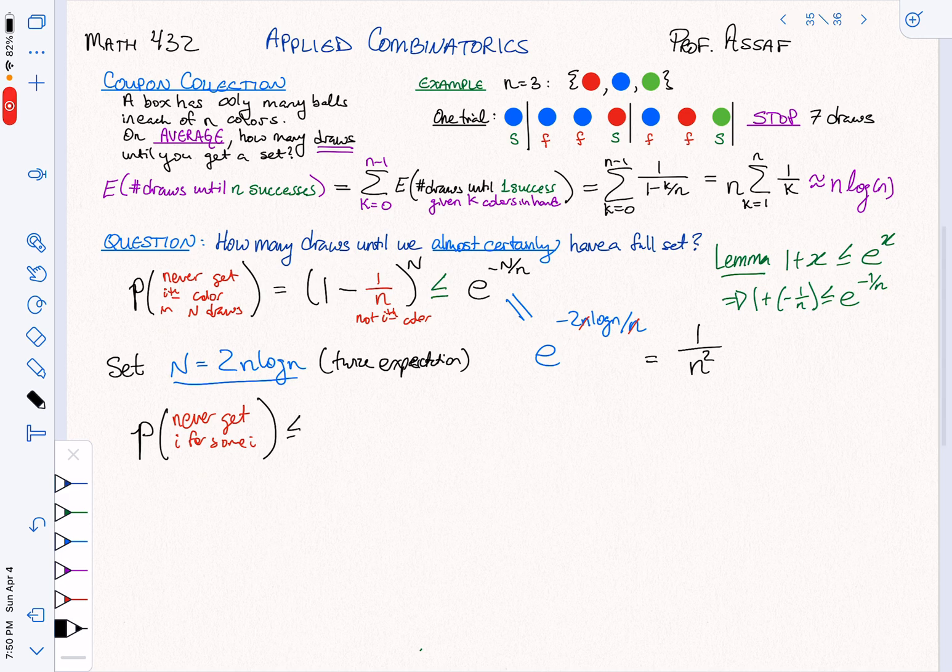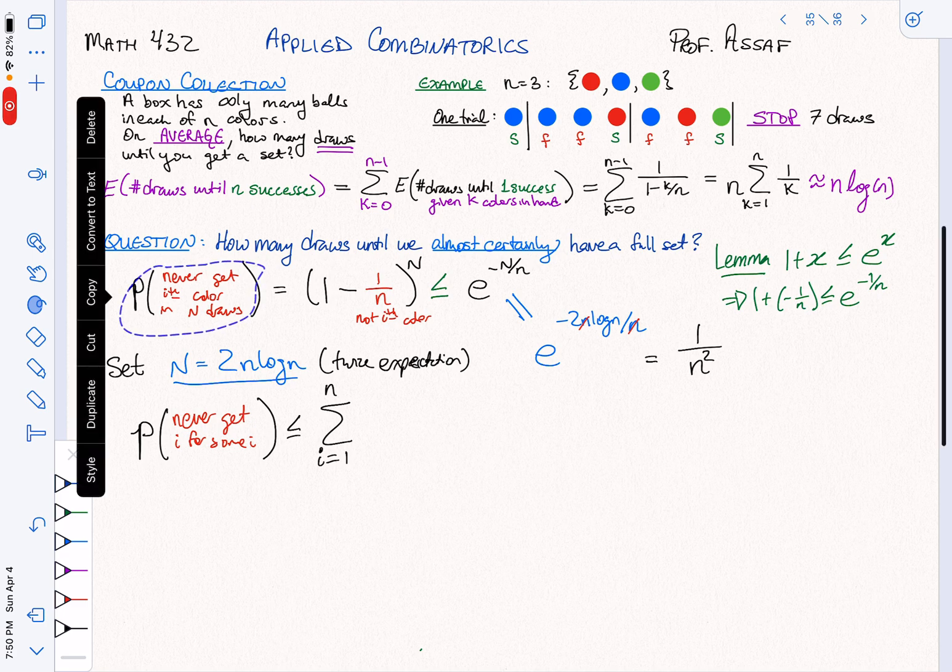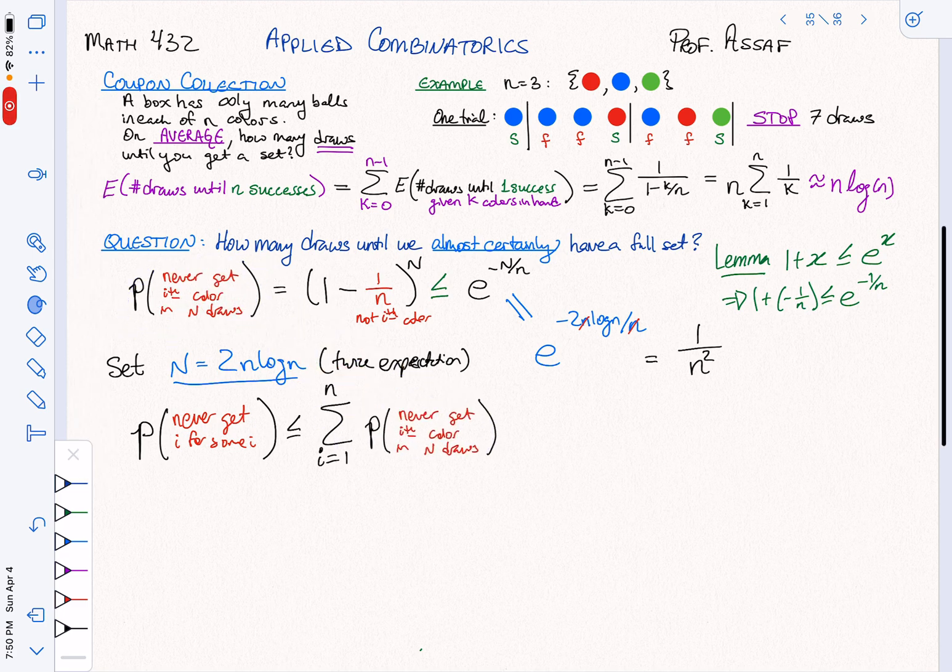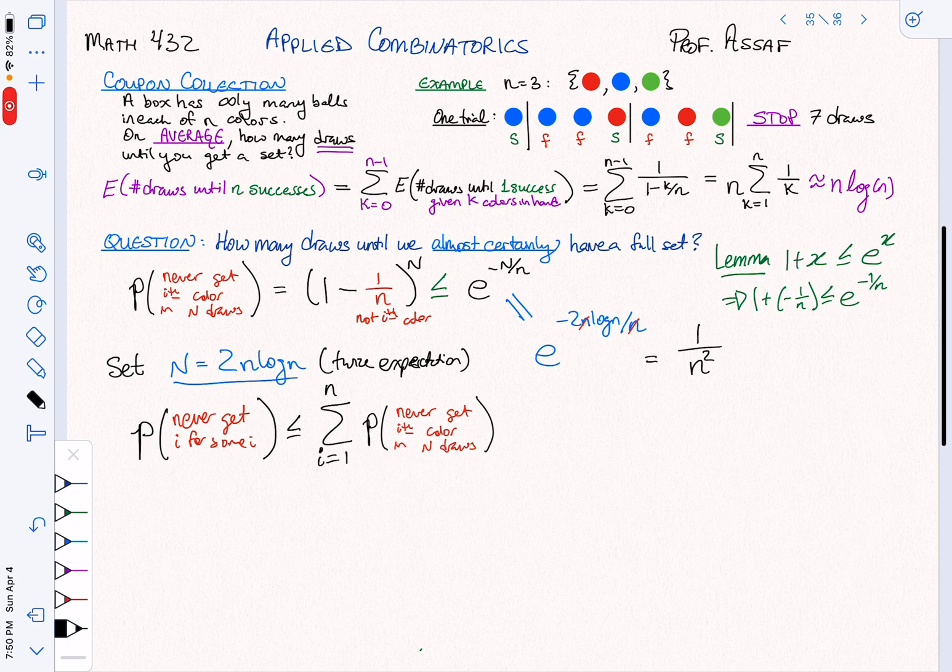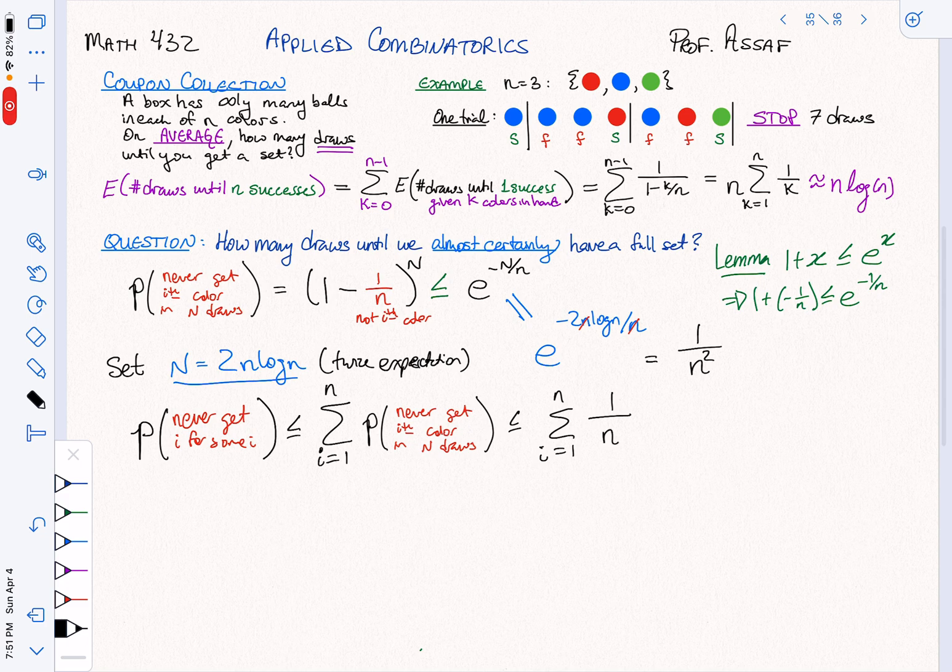The probability that there's some wizard I never get is less than or equal to the sum over all possible wizards I could not get. So this is going to be i equals 1 up to N of that probability right up here. We've just bounded that, so this is less than or equal to the sum from i equals 1 to N of 1 over N squared.